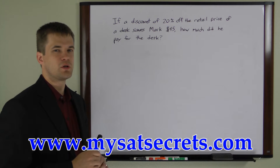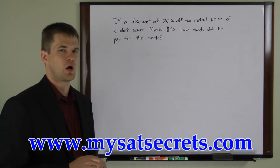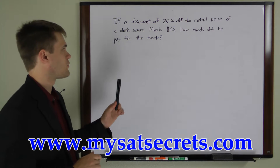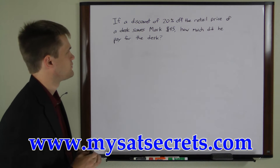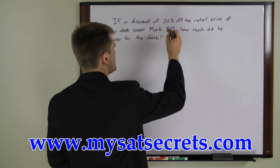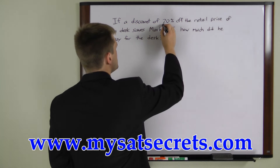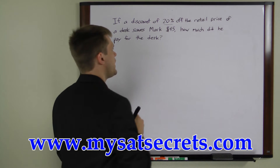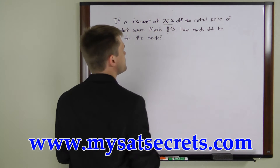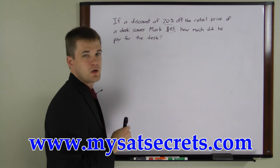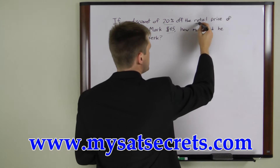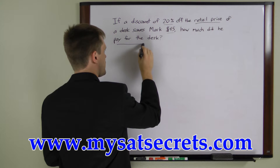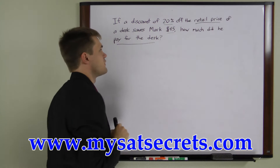The first thing you want to do with this problem is convert the word problem to an equation. The problem tells us that the discount percentage is 20% and the discount amount was $45. It also mentions the retail price and the sale price — the price that was paid for the desk.